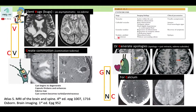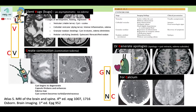Summarizing the stages from both references: in the vesicular stage there is a viable larva with visible cyst and scolex; in the colloidal vesicular stage the larva is dying and creates inflammation and edema; in the granular nodular stage the body is healing, the cyst involutes, and edema diminishes; and finally in the nodular calcified stage the body has healed, leaving only a quiescent fibro-calcified nodule.